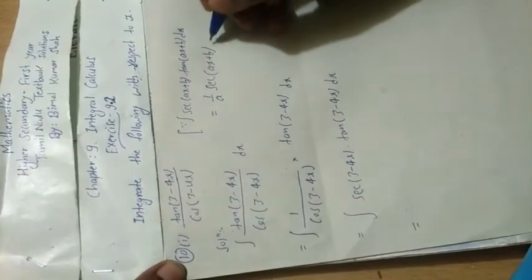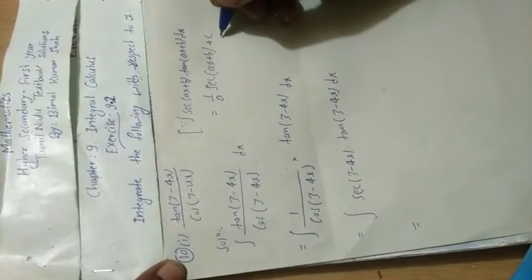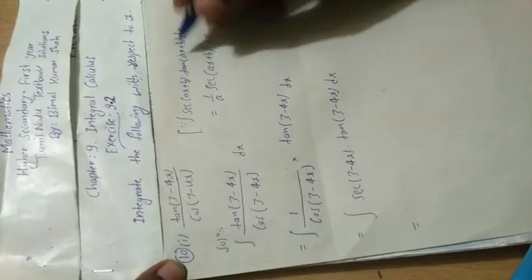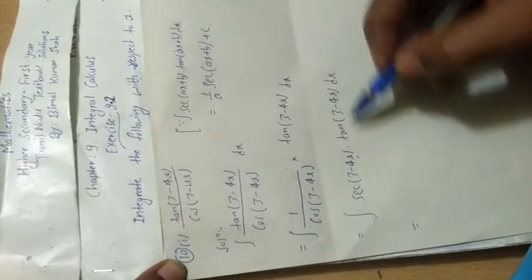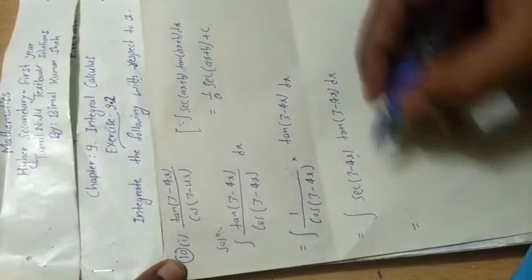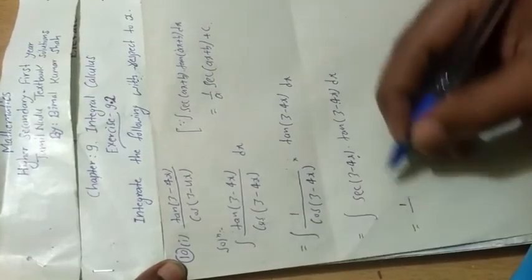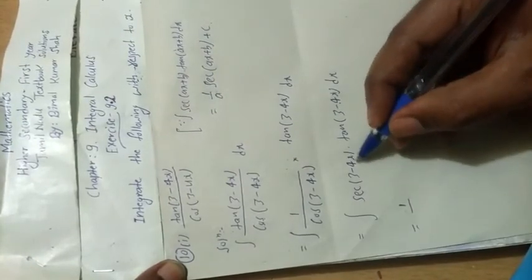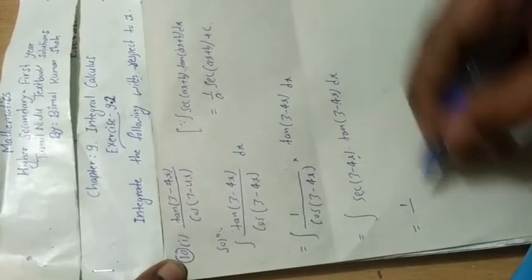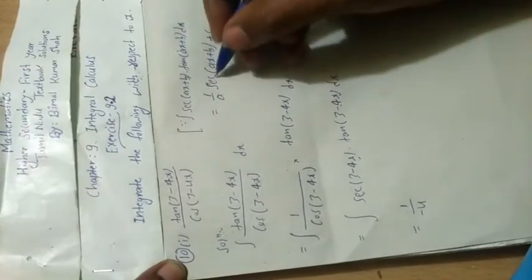This is our formula. So now applying this same formula, see there sec of ax plus b, ax plus b, okay. So here 1 by a, 1 by a means what is the coefficient of this x? Minus four. Minus four, so here minus four.